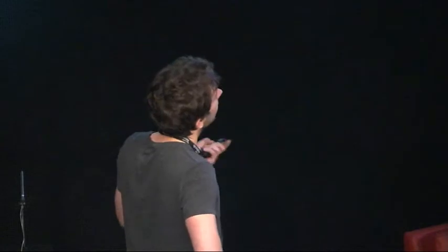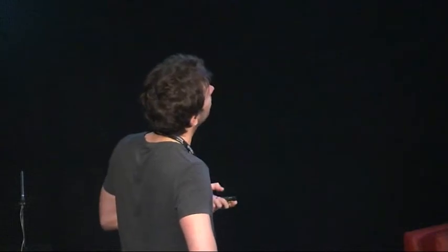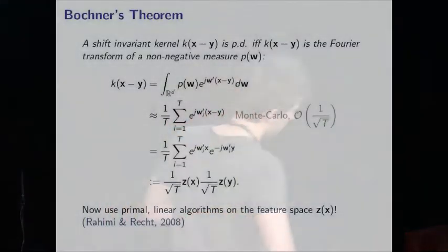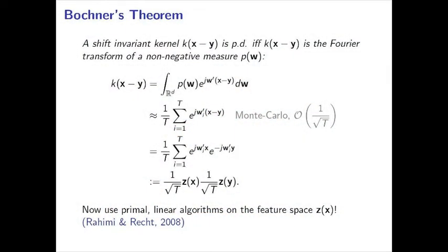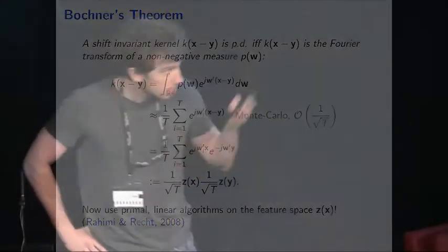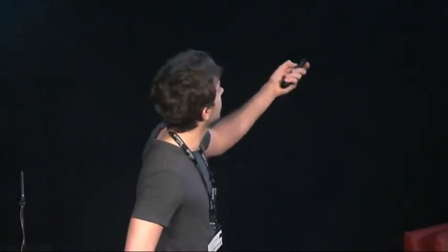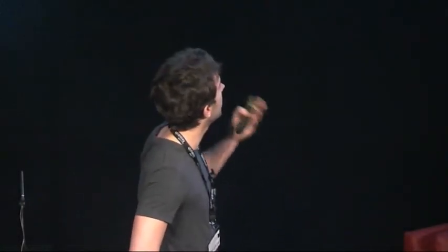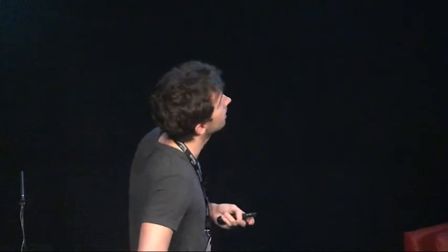One smart trick to do so is to use a classical result from Fourier analysis called Bochner's theorem. This is a pretty old result, but it was not until 2008 when Ali Rahimi and Benjamin Recht decided to use this in the context of kernels.